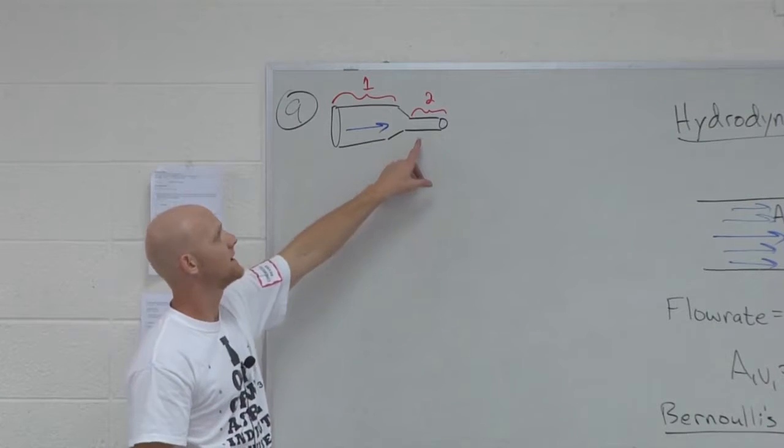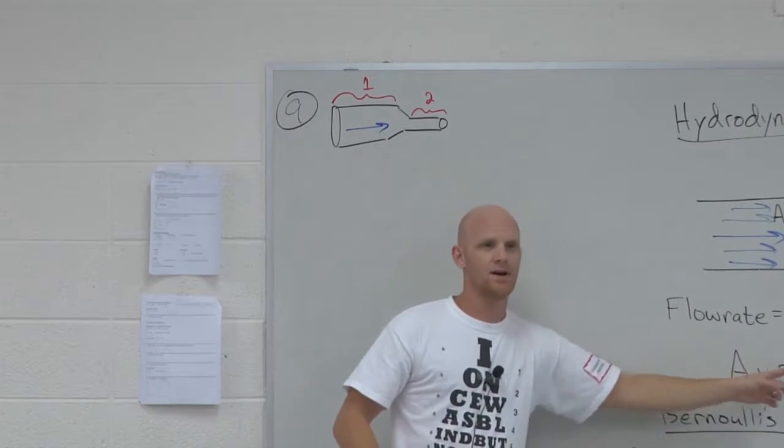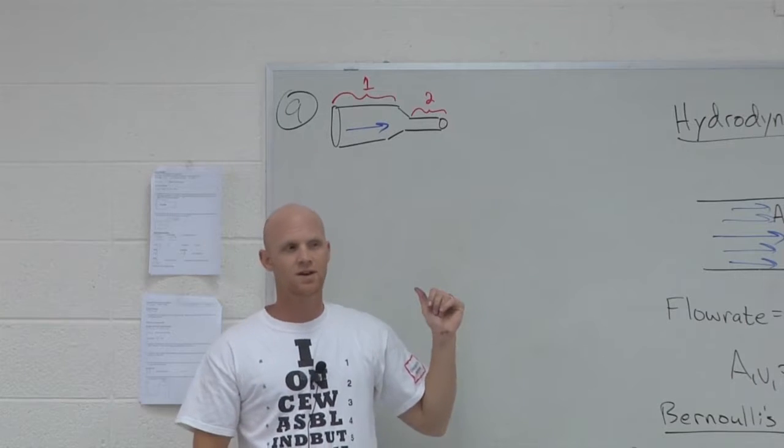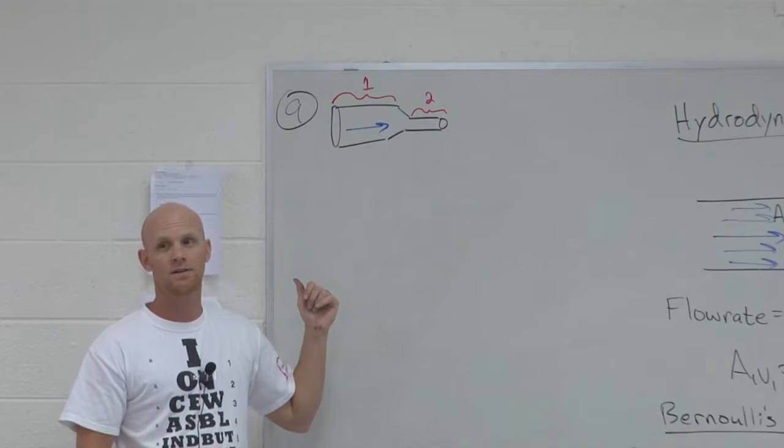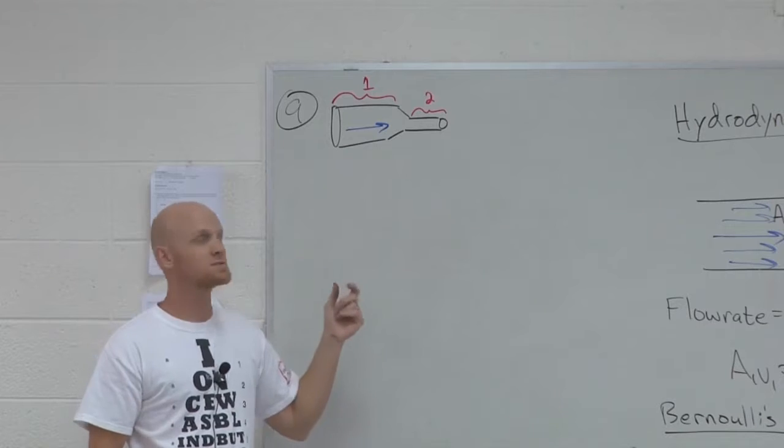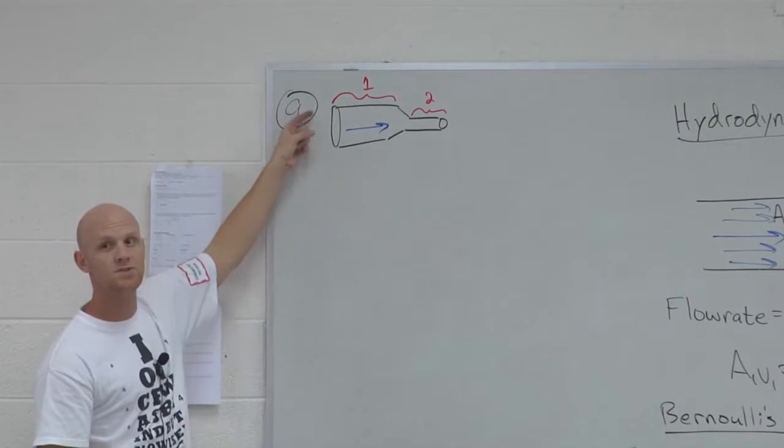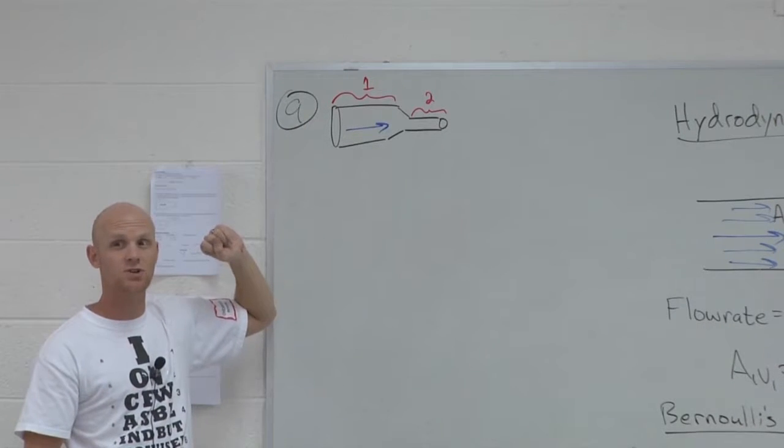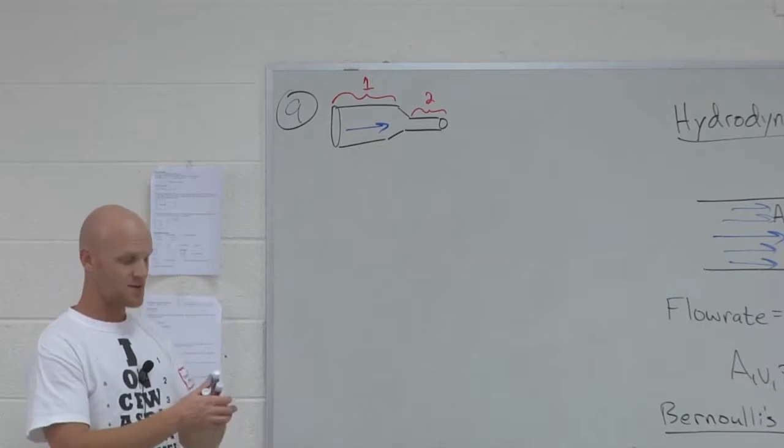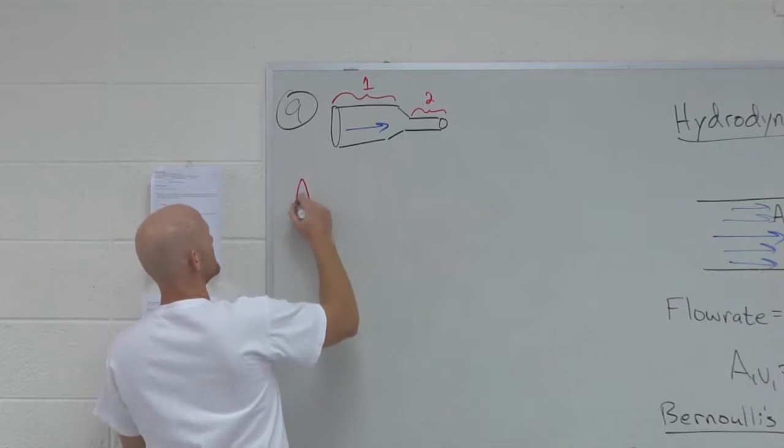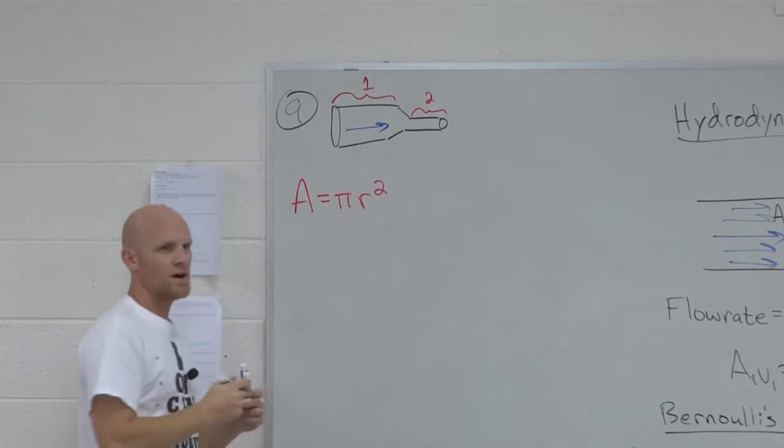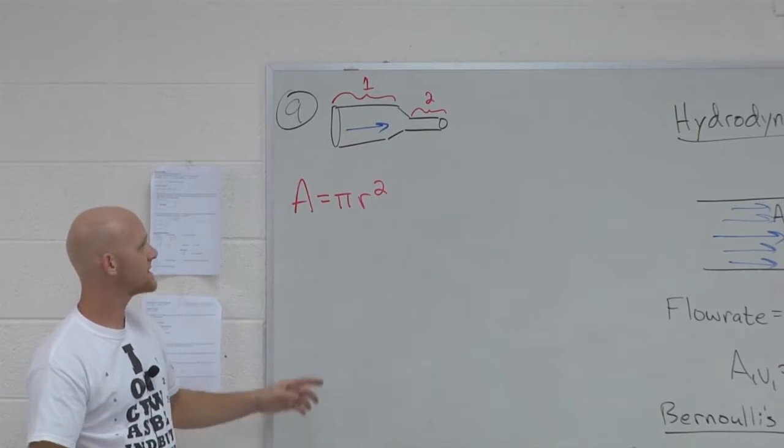Well, so again, it's all about area. And that's what makes this last question tricky, because I didn't give you areas. What did I give you? Information about the radius. But what's the cross-sectional area of a circular tube? Pi r squared. And so area, in this case, is pi r squared.